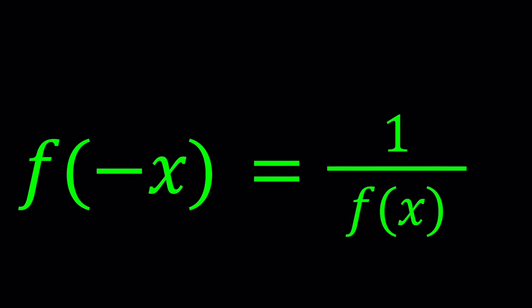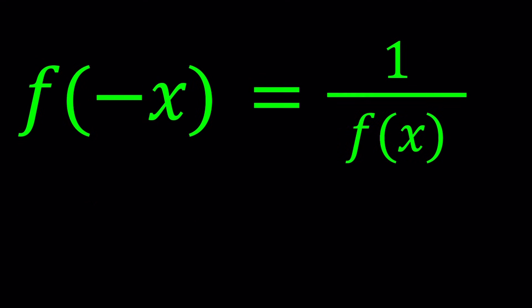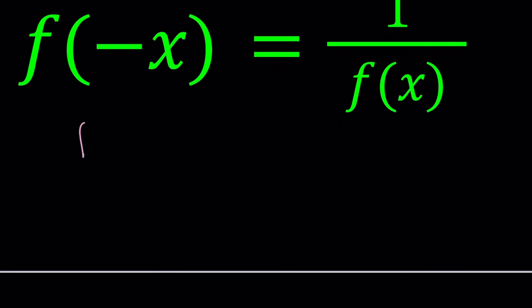First of all, if f of x is not 0, and it can't be 0 obviously, I'd like to multiply both sides by that. So I can look at this equation this way, which is a little better: f of negative x times f of x is equal to 1. Of course, f of x cannot be 0, f of negative x cannot be 0 either.